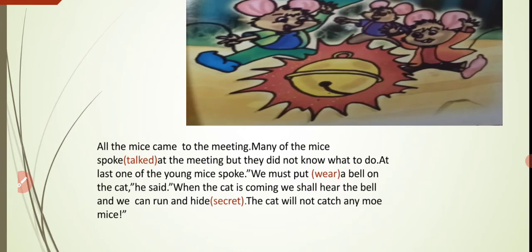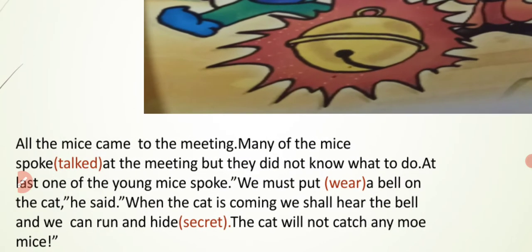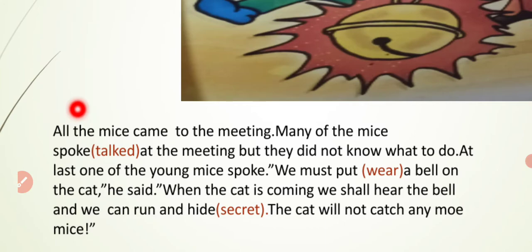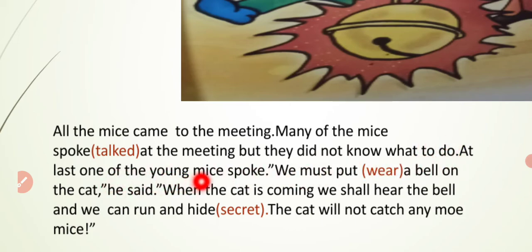This is the third paragraph: 'All the mice came to the meeting. Many of the mice spoke at the meeting, but they did not know what to do. At last, one of the young mice spoke: we must put a bell on the cat, he said. When the cat is coming, we shall hear the bell and we can run and hide. The cat will not catch any more mice.'